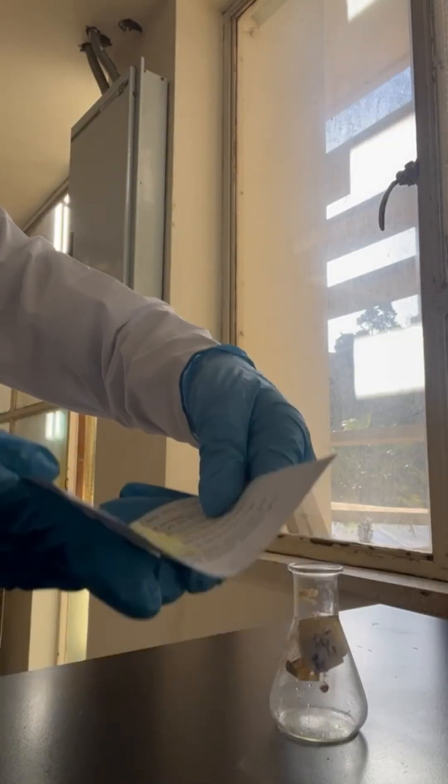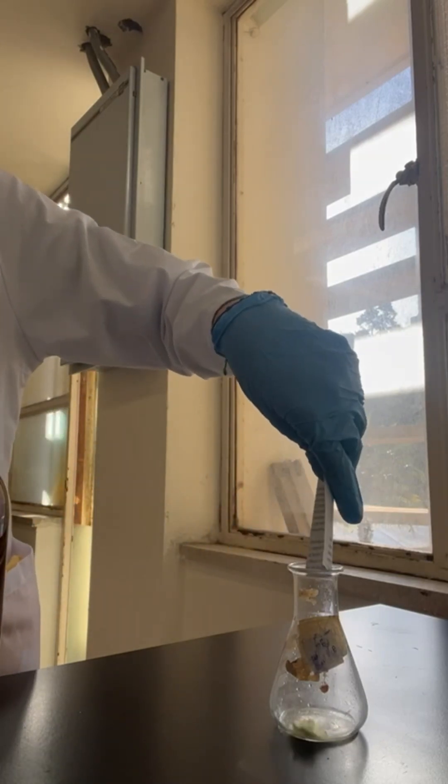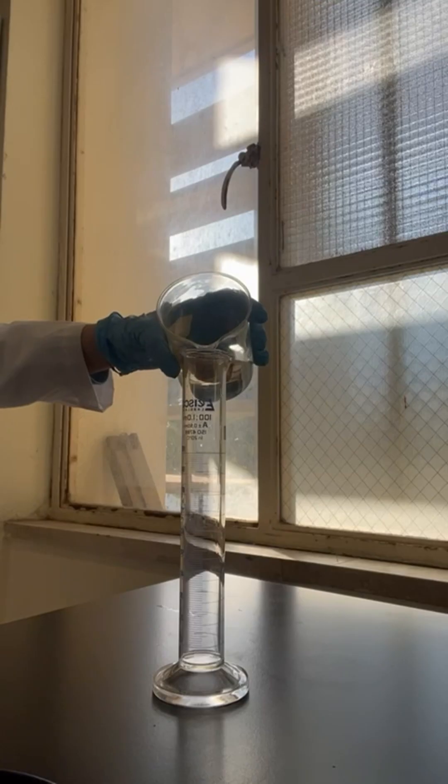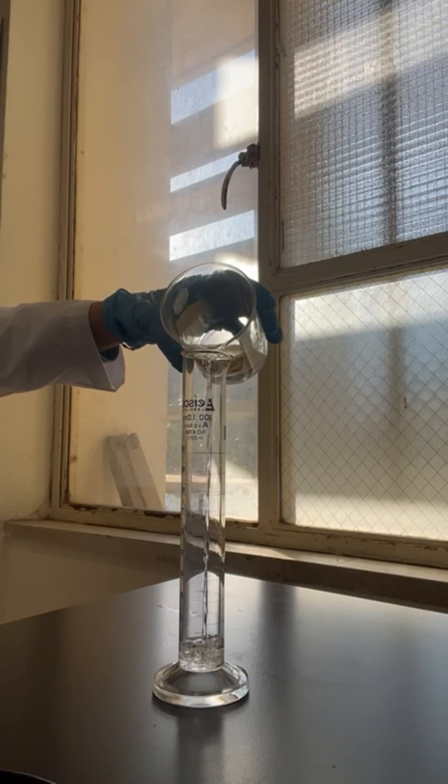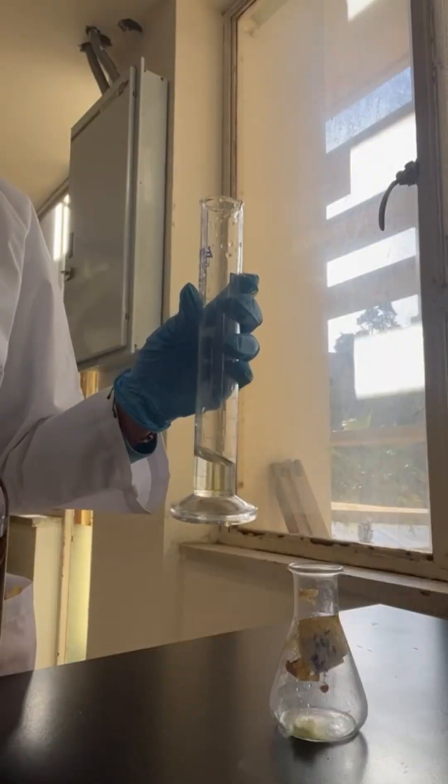Then I weigh around 0.5 grams of the unknown and transfer that to an Erlenmeyer flask. Next, I pour 20 milliliters of ethanol using a graduated cylinder and add this to the unknown in the Erlenmeyer flask.